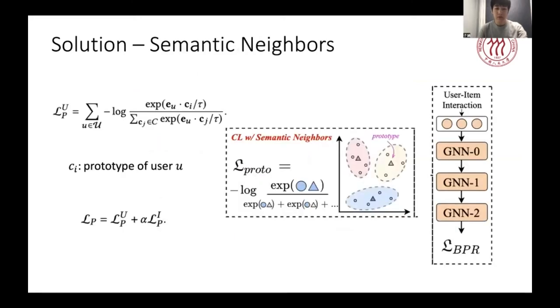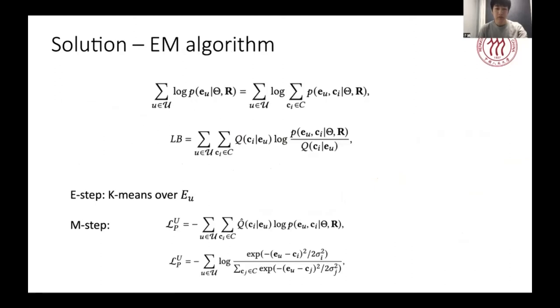For contrastive learning with semantic neighbors, we identify the semantic neighbors by learning the latent prototype for each user and item. The alignment is conducted between each user or item and their prototype. As the prototype of each user cannot be found beforehand, we treat it as a latent factor and formulate the goal of model in a log-likelihood function. Then try to optimize its lower bound. This function can be optimized by EM algorithm.